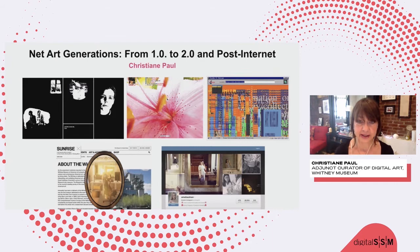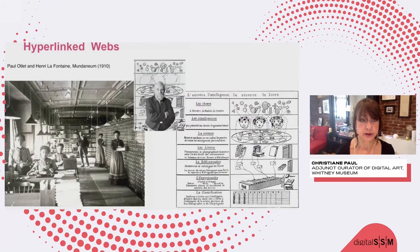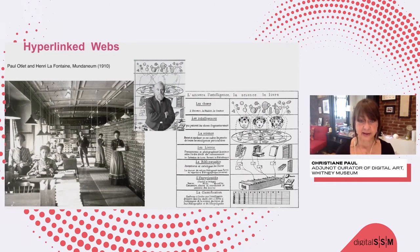I want to start by giving a little background on the evolution of the internet itself and thinking about web-based browsing and art. Going back to the conceptual origins of a web, one needs to mention Paul Otlet and Henri Lafontaine's Mundaneum, which was founded in 1910. What they did was envision a kind of library that would contain the knowledge of the world and could be browsed by everyone. In the 1930s, Otlet also envisioned electronic telescopes which could be used for browsing information. So conceptually, you had this idea of a web pretty early on.